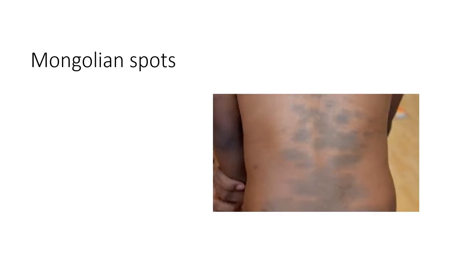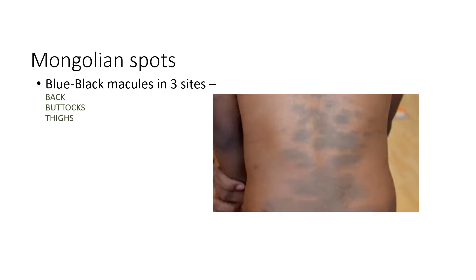Then comes Mongolian spots. These are blue-black macules which are mainly seen over three sites: the back, buttocks, and thighs.